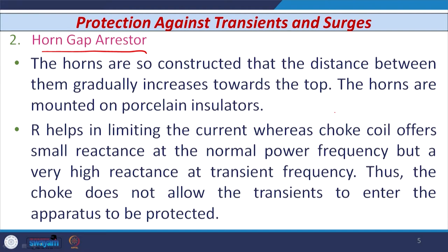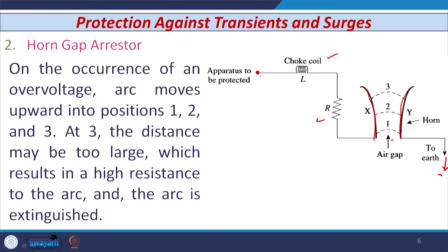The choke coil does not allow transients to enter the apparatus to be protected. On the occurrence of an overvoltage, the arc moves upward from point 1 to point 2 to point 3. When it reaches point 3, the distance is very large, resulting in high arc resistance. The arc lengthens and since R = ρL/A, as the length increases, the resistance of the arc increases, and the possibility of sustaining the arc reduces — the arc can be easily extinguished.